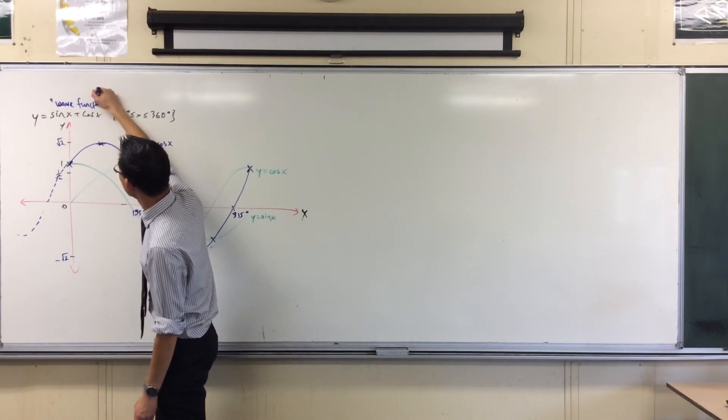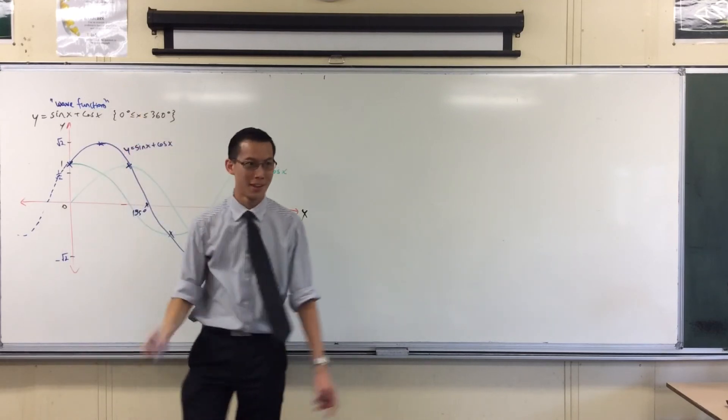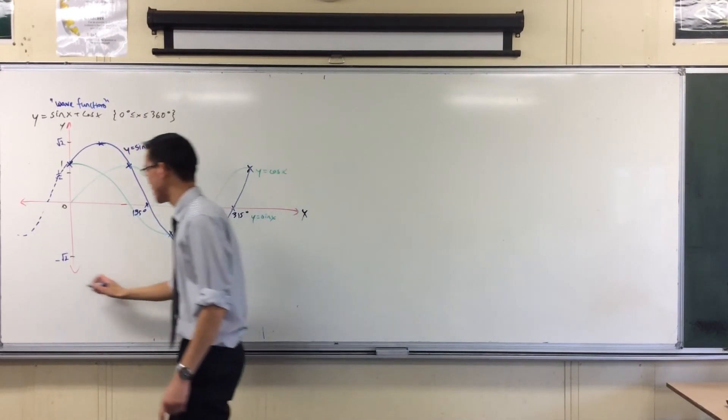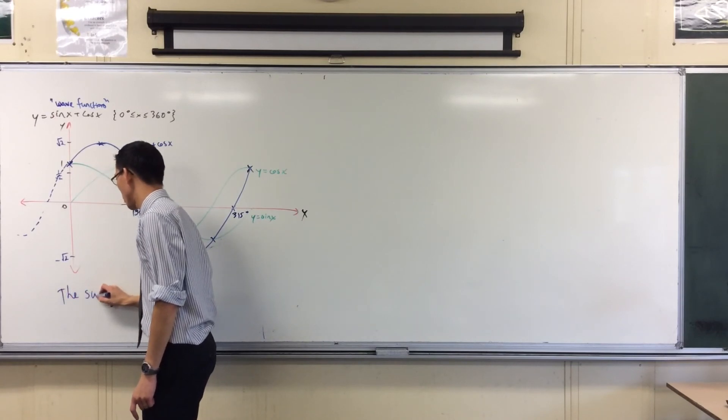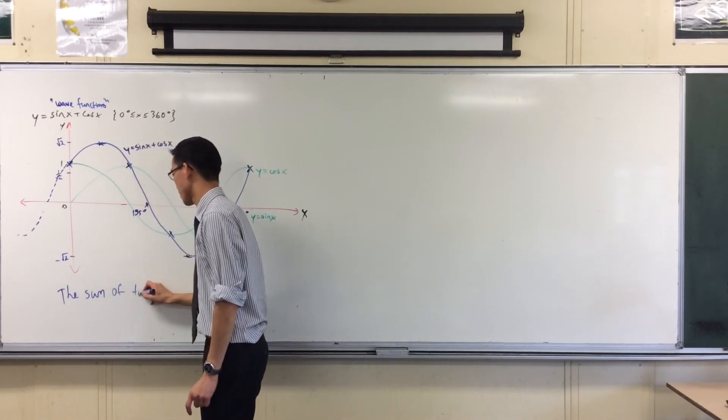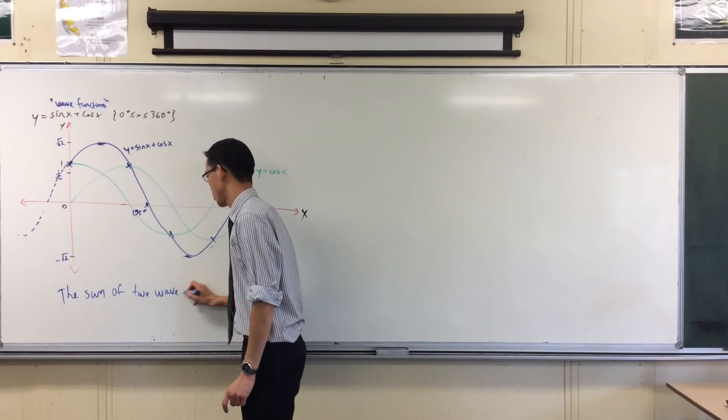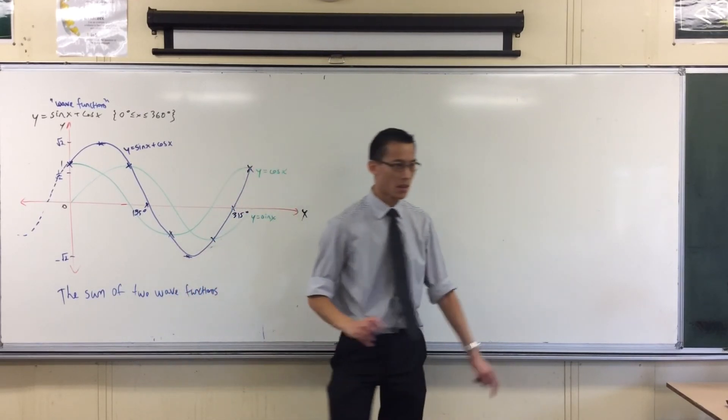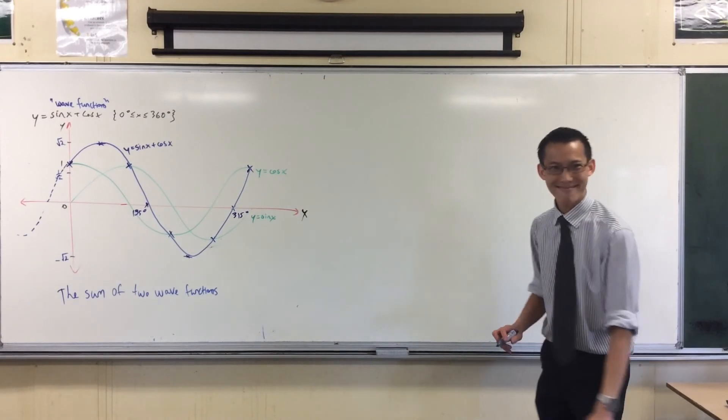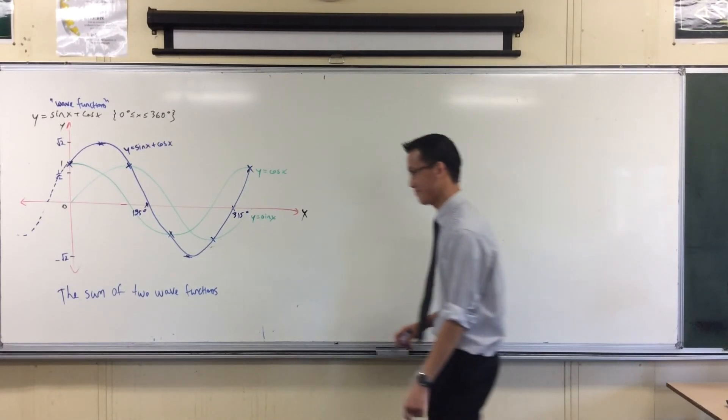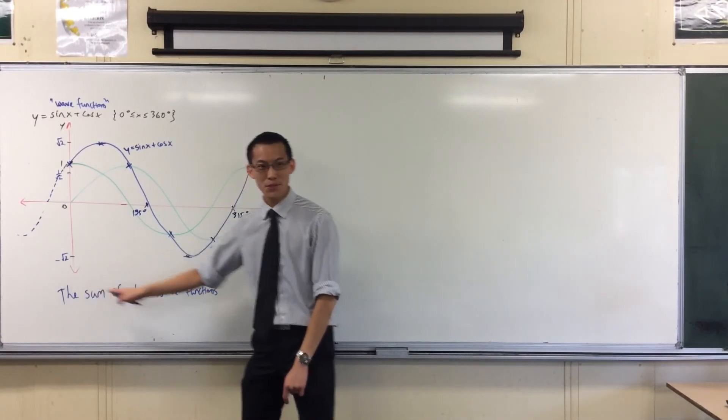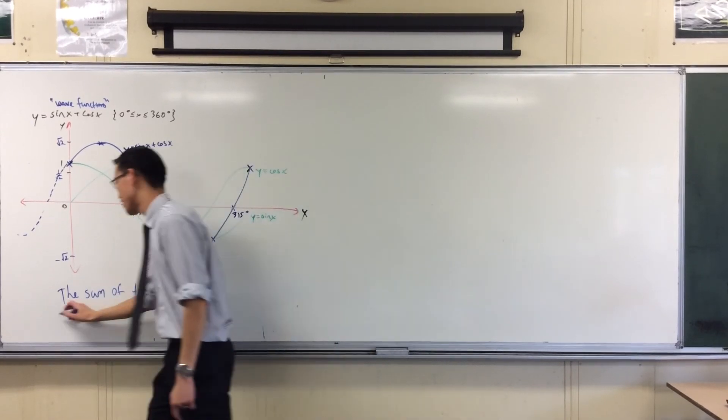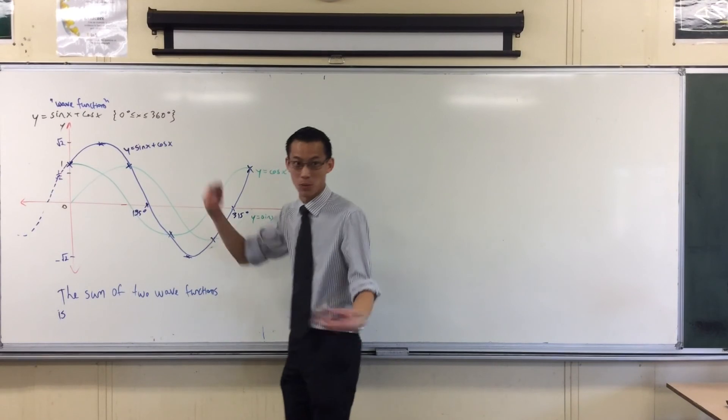So what I've got here, sine x plus cos x, is the sum of two wave functions. The sum of two wave functions. This is what you do in science when you have waves. So the sum of two wave functions is another wave function. Can you see? It's just another one. It's bigger.